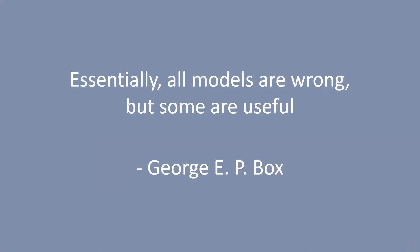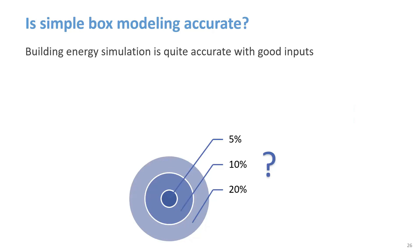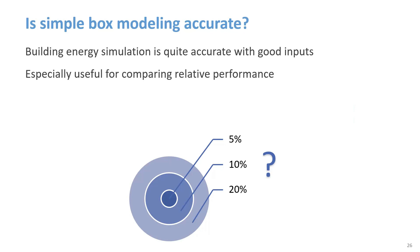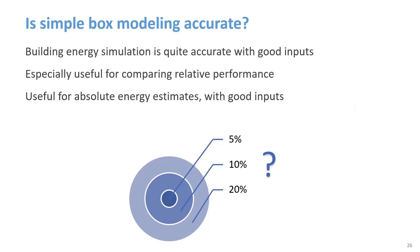How about some questions about simple box modeling — is it accurate? Building energy simulation programs are quite accurate when we provide accurate inputs, and that's clearly a challenge when creating a simple box model at a very early stage when many assumptions are necessary. It's especially useful for comparing alternatives, since relative performance is less sensitive to those assumptions compared to an estimate of absolute energy consumption. It can also be useful for absolute energy consumption estimation with good inputs.